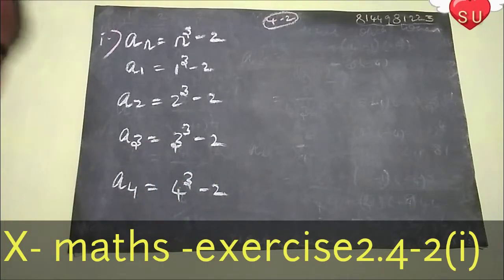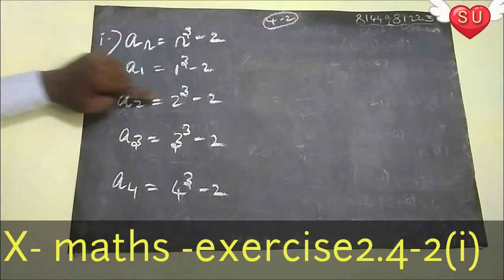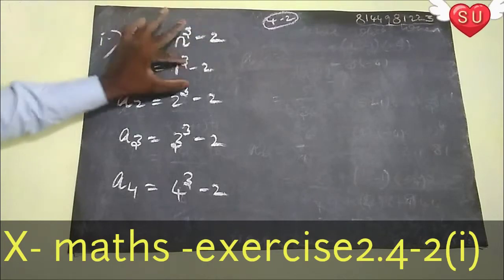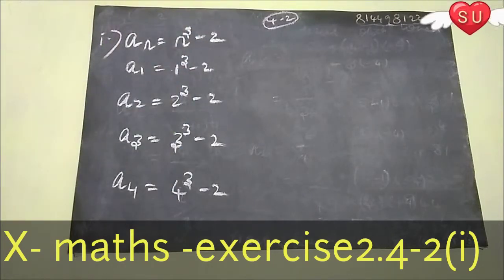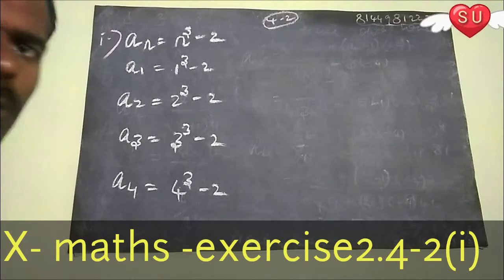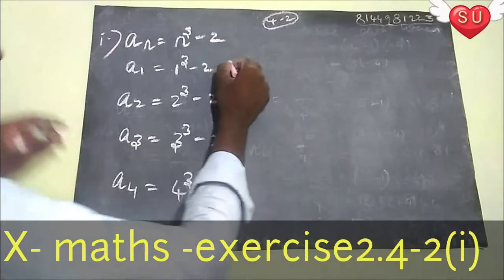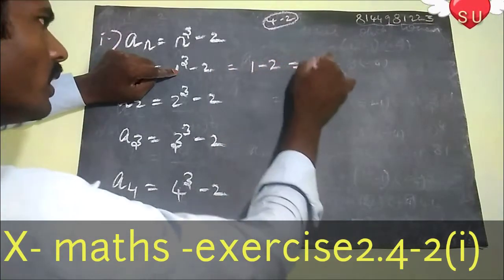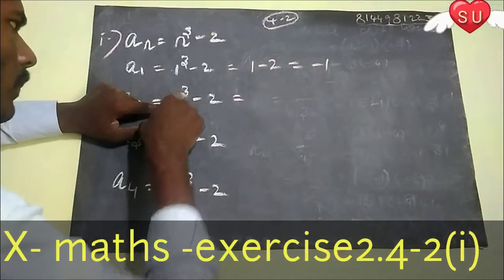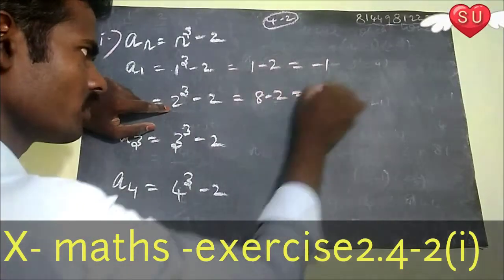Now we can simplify each term. For A^1: 1 minus 2 equals minus 1. For A^2: 2 cubed is 8, and 8 minus 2 equals 6.